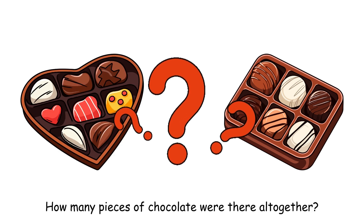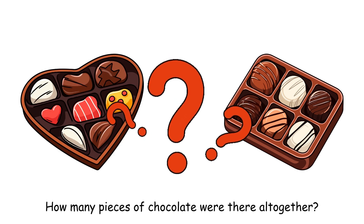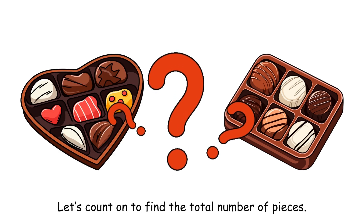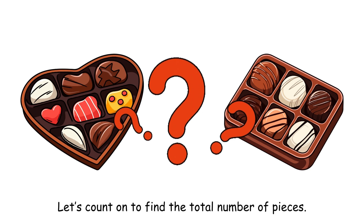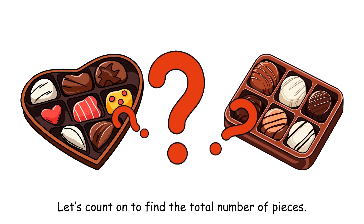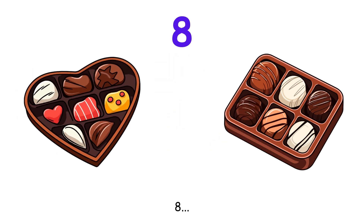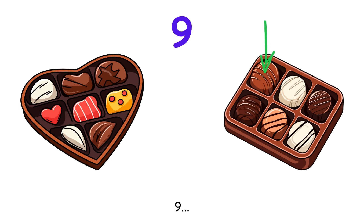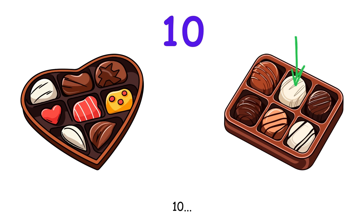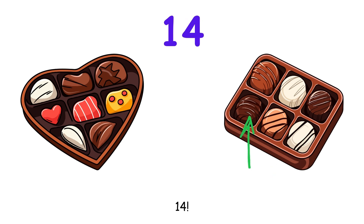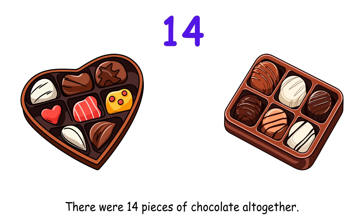How many pieces of chocolate were there altogether? Let's count on to find the total number of pieces. Eight, nine, ten, eleven, twelve, thirteen, fourteen. There were fourteen pieces of chocolate altogether.